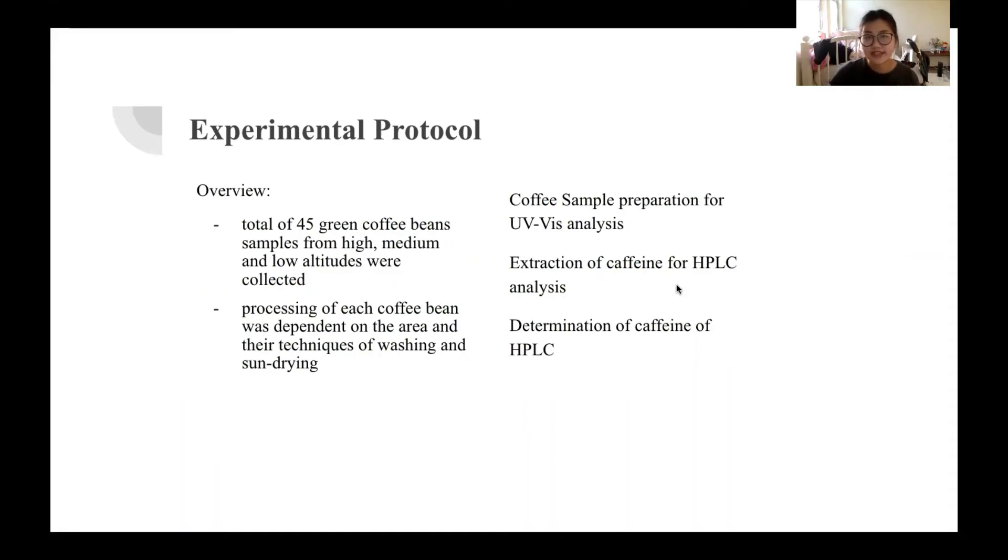So in this experiment there are a total of 45 green coffee bean samples which are taken from high, medium, and low altitudes. The processing of each coffee bean was dependent on the area and the technique of washing and sun drying that they were going through. And so there are three main parts to the experiment. The first is coffee sample preparation for UV-VIS analysis. The first step is to grind and screen 20 grams of green coffee bean samples through a 300 micrometer sieve to achieve a uniform mixture and then storing that sample at room temperature. It was also to weigh a gram of it and then add it to 100 milliliters of distilled water and then stirring the mixture for an hour and gently heating it to 70 degrees Celsius for easy extraction of the caffeine from the sample solution. And then the last step in this part is to filter the solution using a Whatman filter paper to achieve a clear solution.